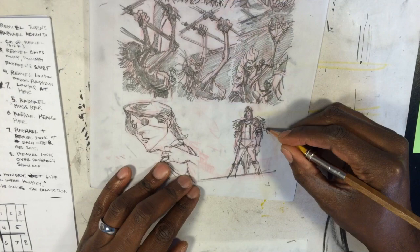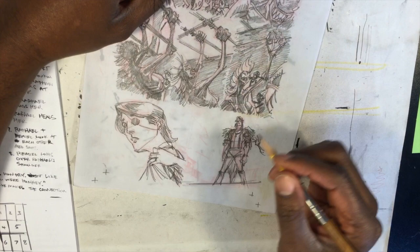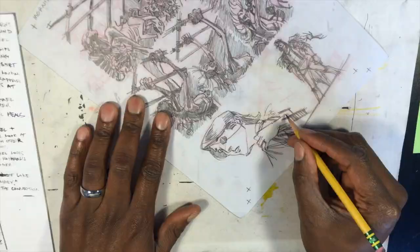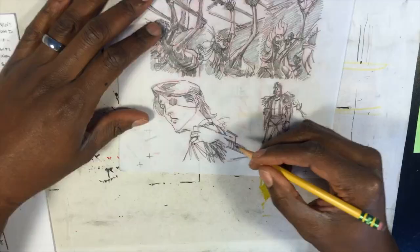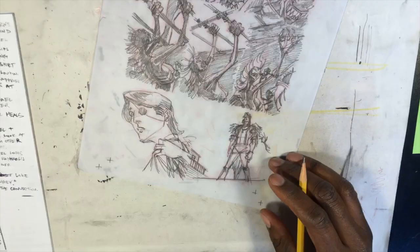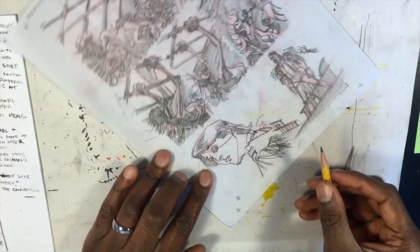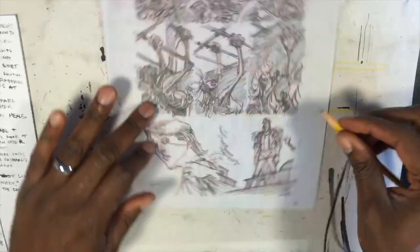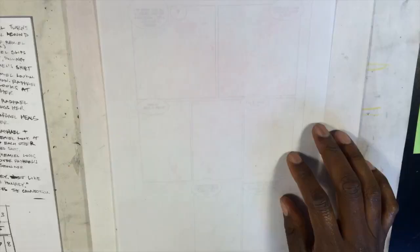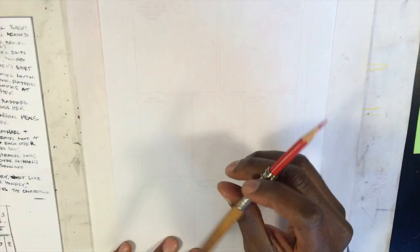That helps dictate whether a page ends up being a nine-panel grid, a six-panel grid, three or four tiers, a splash page, or what have you. Once you know your beginning and your end, it forces you to break down the next step: what do I need to get from A to B? What is essential?